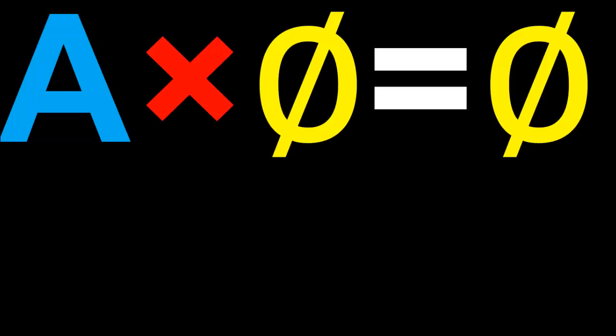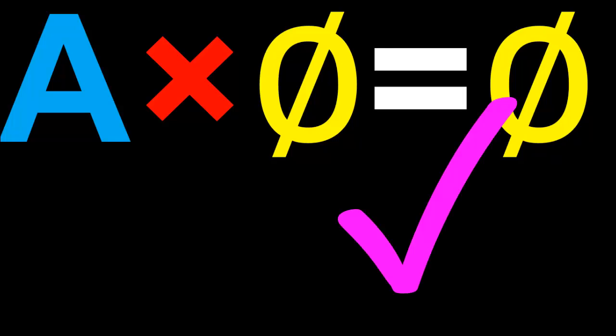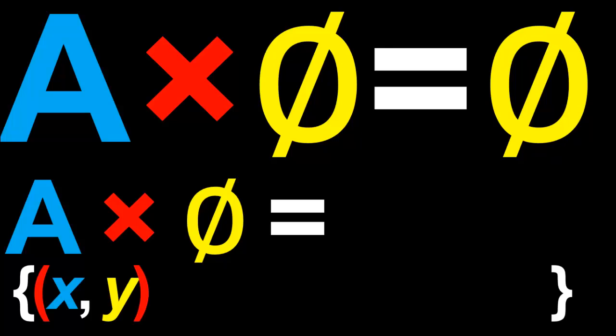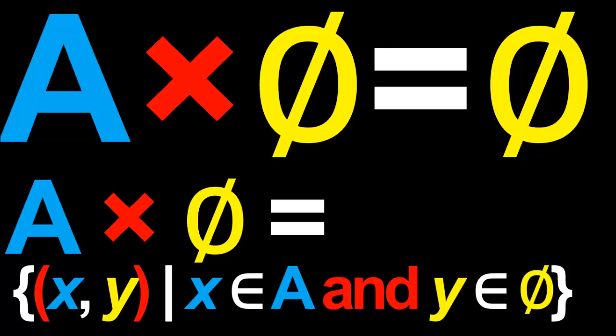True or false: given any set A, is the Cartesian product of A with the empty set equal to the empty set? True. The Cartesian product of A and the empty set is by definition the set of all ordered pairs (x, y) such that x is in A and y is in the empty set. However, there is no element in the empty set, so there is no ordered pair (x, y) satisfying this property. Hence, the Cartesian product of A with the empty set contains nothing — it is itself the empty set.